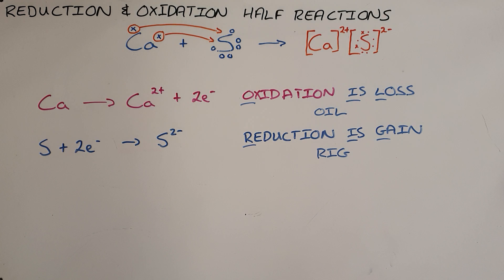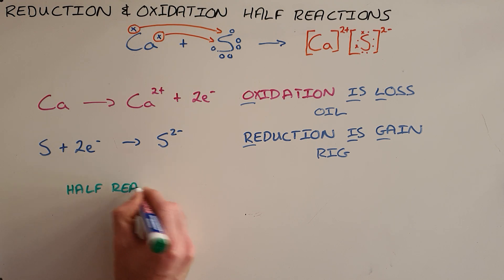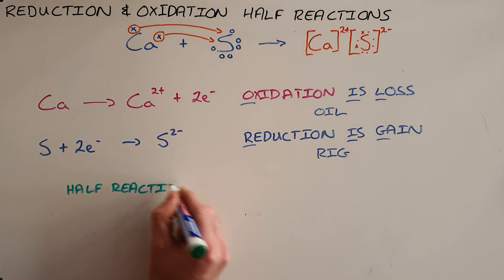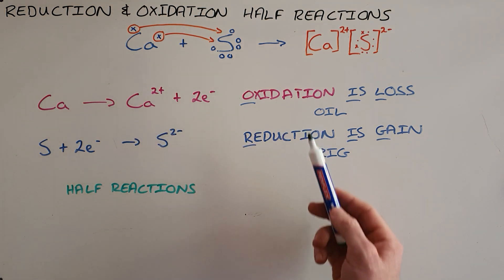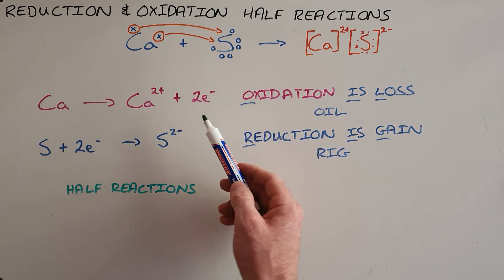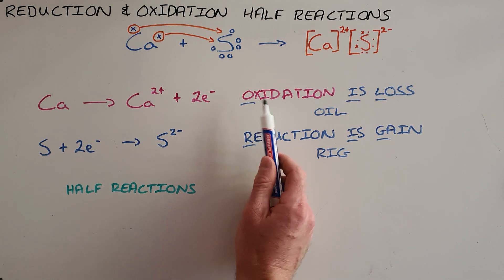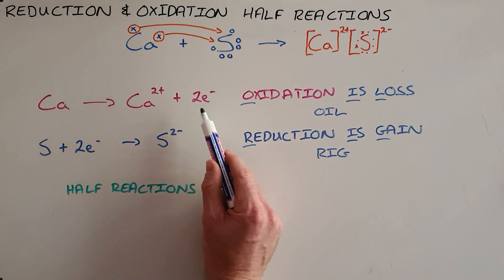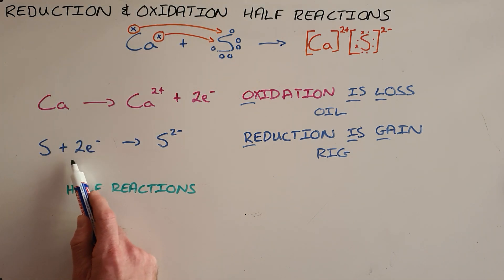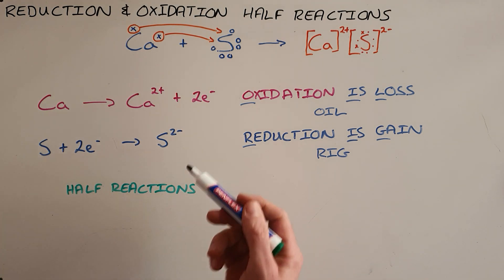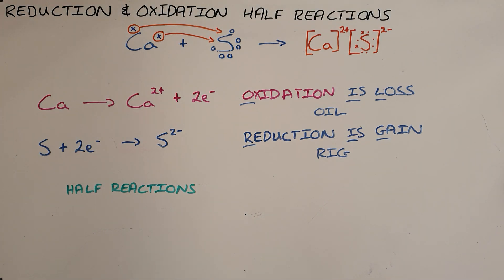It is important to note here that these are referred to as half-reactions, because they cannot happen in isolation. It is not possible for calcium just to lose electrons with nobody or no atom there able to gain those electrons. So we say that oxidation requires reduction, because in order for calcium to give off these two electrons, we require something — in this case sulfur — that is able to gain or accept those two electrons. They are called half-reactions because we require two of them to have a complete reaction.